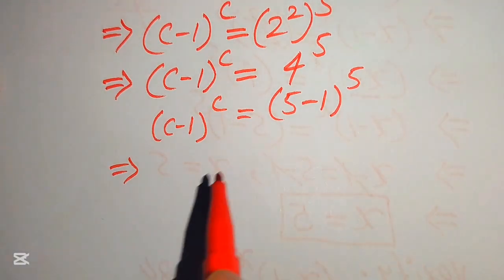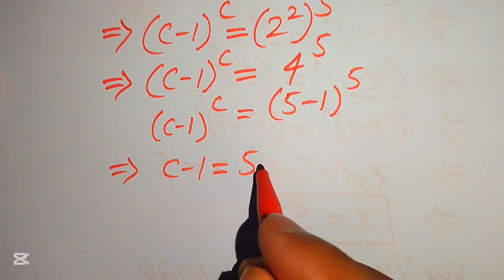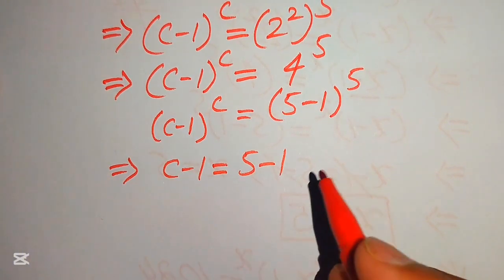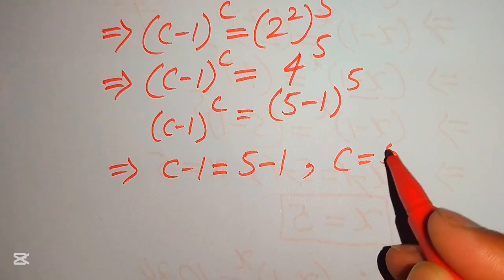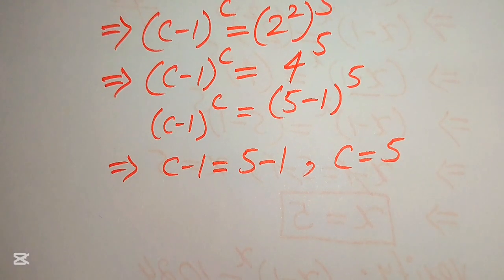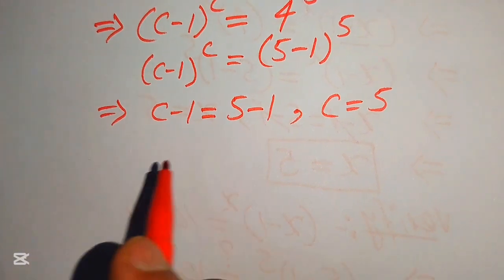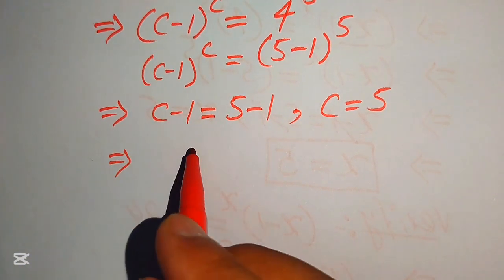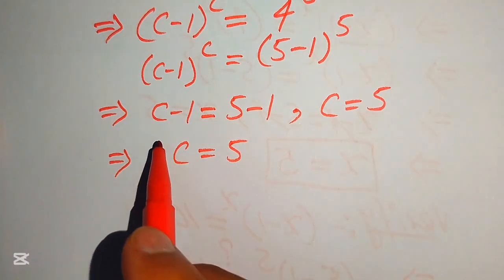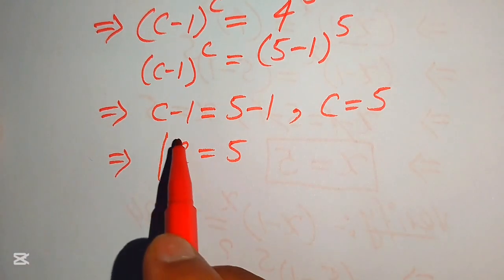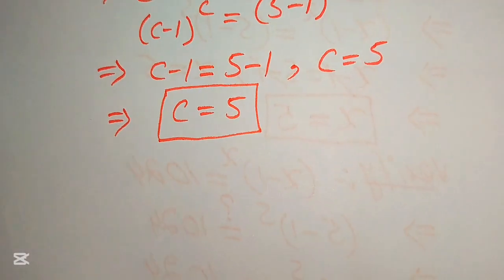Comparing the bases gives us c minus 1 equals 5 minus 1, and comparing the exponents gives us c equals 5. From both cases we get the same answer: c equals 5.